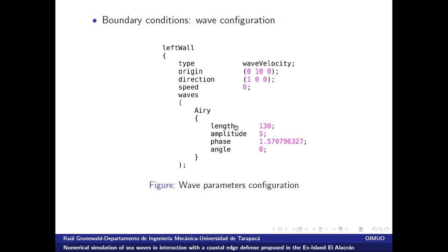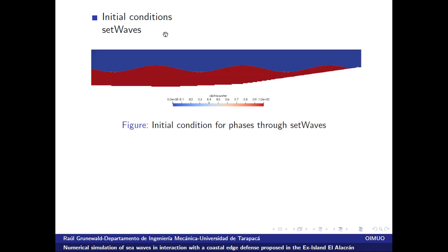The wave model parameters are: wavelength of 130 meters, amplitude of 5 meters, a phase value corresponding to π/2 — which is appropriate to introduce waves into the domain — and an angle of 0. For the initial conditions, the setWaves tool was used to create an initial wave profile where red represents water and blue represents air.